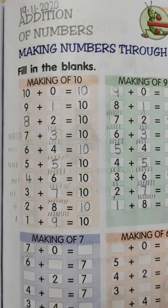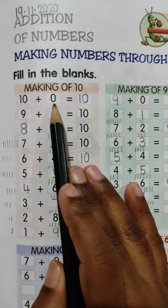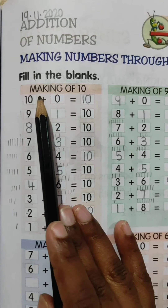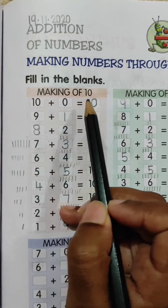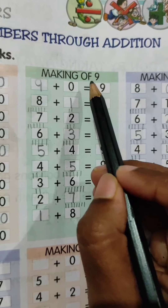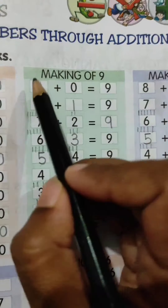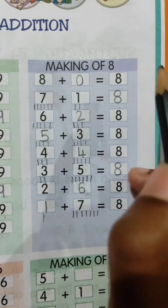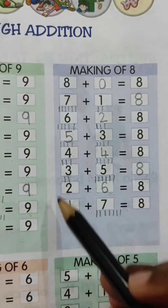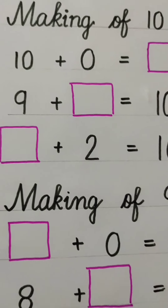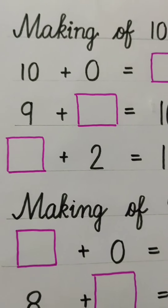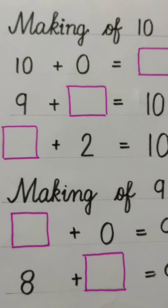बच्चो आज हम लोग numbers को add करके एक number बनाएंगे. जैसे making of 10 — हम लोग 10 बनाएंगे दो numbers को add करके. Making of 9 — हम लोग 9 को बनाएंगे दो numbers को add करके. Making of 8 — हम लोग 8 को बनाएंगे दो numbers को add करके. So let's start.